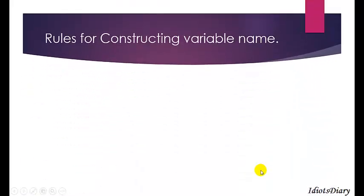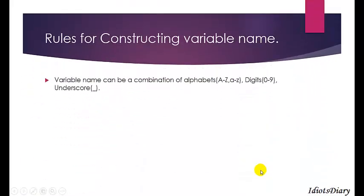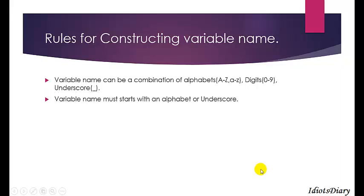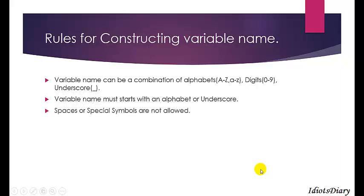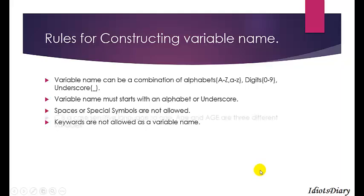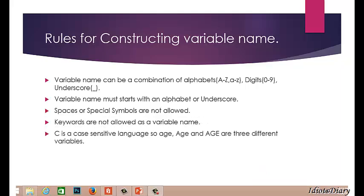Rules for creating a variable: variable names can contain alphabets, digits, and underscores; variable names must begin with an alphabet or underscore; spaces or special symbols are not allowed; keywords are not allowed as variable names; and C is a case-sensitive language, so it differentiates between uppercase and lowercase letters.